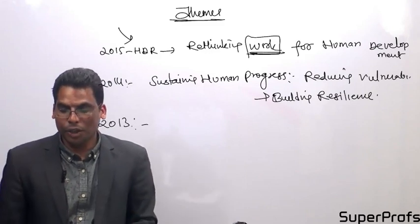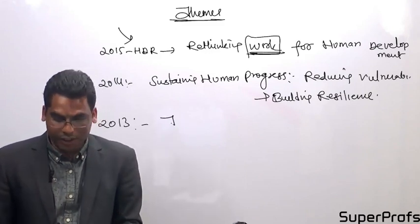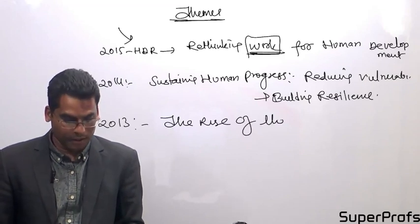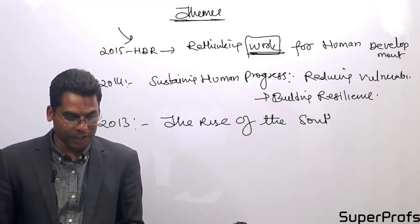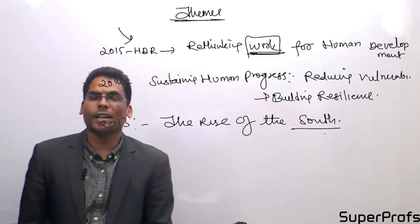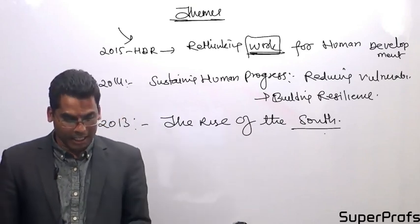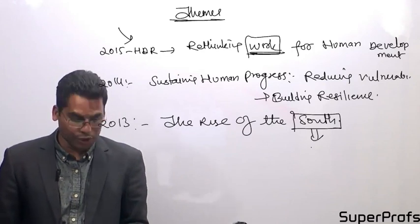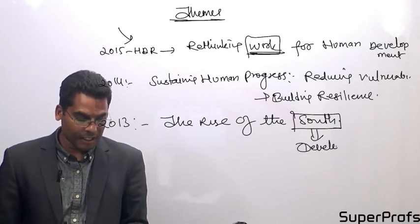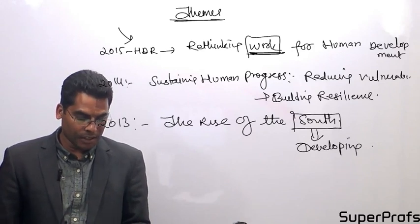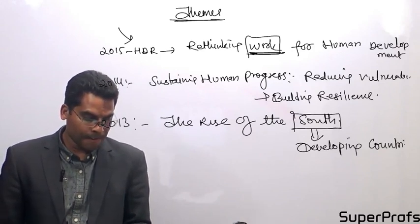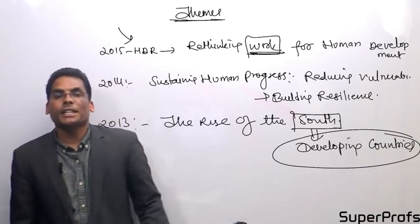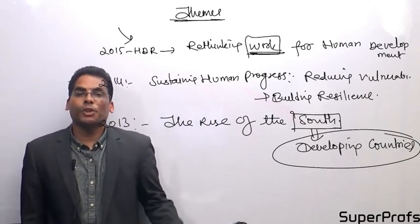The 2013 Human Development Report theme was 'The Rise of the South.' South here does not mean South India — it is a term used for developing countries. So 'Rise of the South' means the rise of developing nations. Then 2014 was 'Sustaining Human Progress,' and 2015 was 'Rethinking Work.'